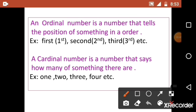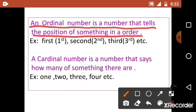Once again, an ordinal number is a number that tells the position of something in an order. Example: first, second, third, etc.